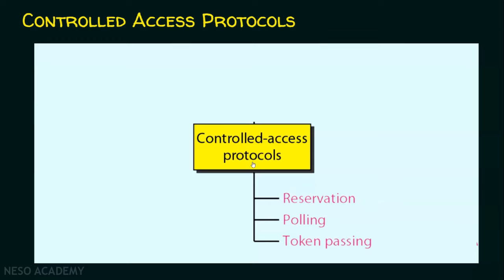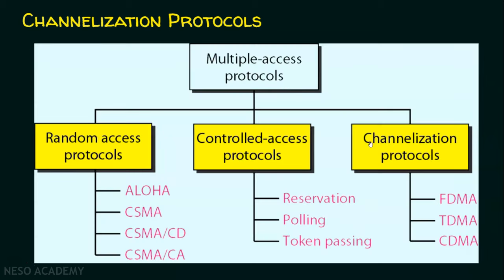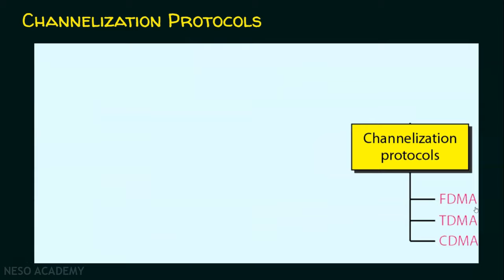The last type is the channelization protocol. Channelization is a multiple access method in which the available bandwidth of a channel is shared in time, frequency, or through code between stations. The bandwidth of a shared channel is divided in terms of time, frequency, or code. The schemes under channelization protocols are FDMA (Frequency Division Multiple Access), TDMA (Time Division Multiple Access), and CDMA (Code Division Multiple Access).